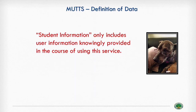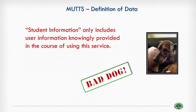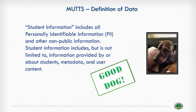For starters, his definition of data: student information only includes user information knowingly provided in the course of using this service. Well, this is a problem — very much a bad dog provision. A better approach would have been to broaden that definition; saying only information 'knowingly collected' excludes all sorts of things.